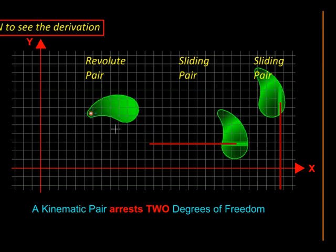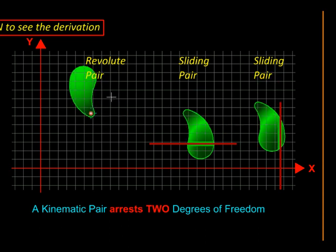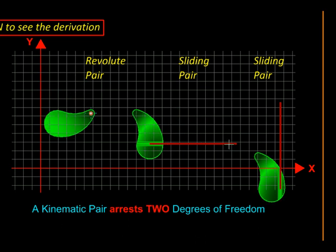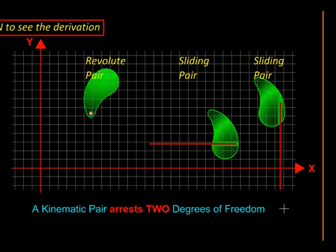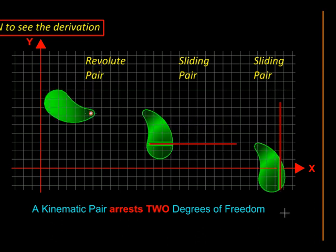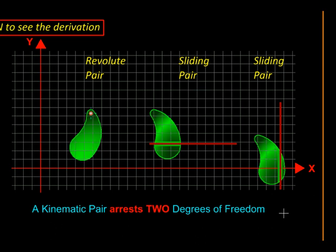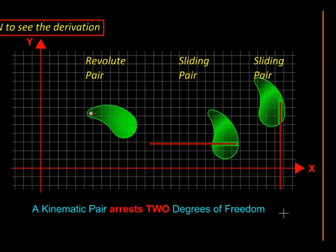Let us see what the body does. So now it is capable of only rotation, or only translation along X, or only translation along Y. So out of the three degrees of freedom it had, the pair has absorbed two degrees of freedom.